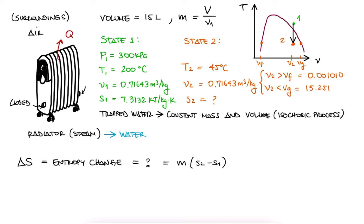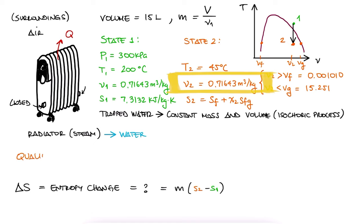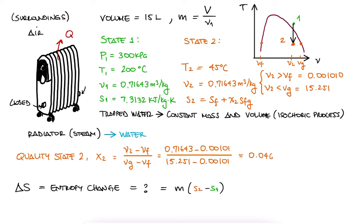Therefore, we need to calculate the quality so that we can calculate the specific entropy at state 2, S2. Since we have the specific volume at state 2, we use it in combination with VF and VG to find that the quality is 0.046913. With this quality value, we calculate S2 as SF plus X2 times SFG.